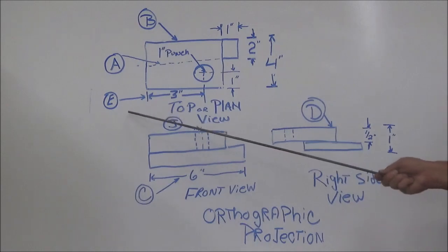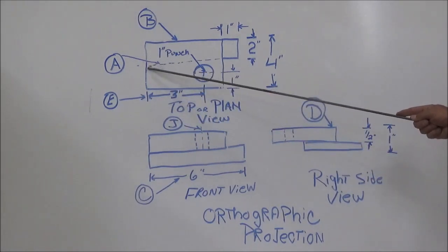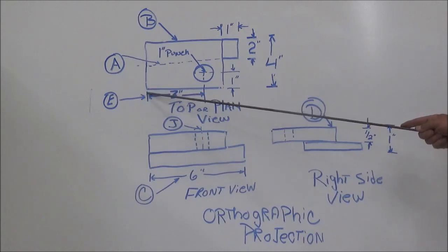Take a look at E. E is showing us that this edge of this object is being extended down. And that is called an extension line. I don't think I covered that with you yet. So let's talk about that. That's an extension line.